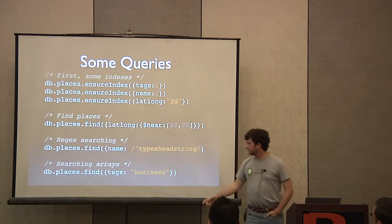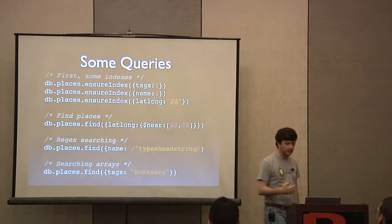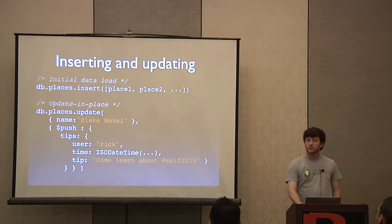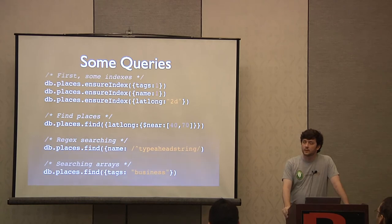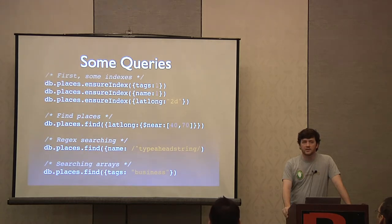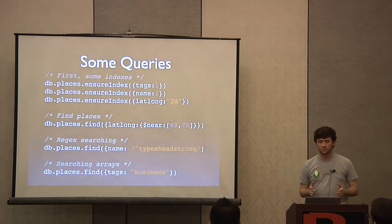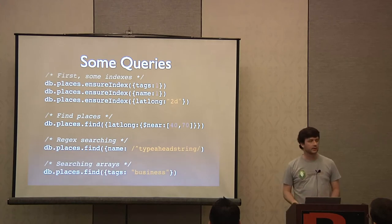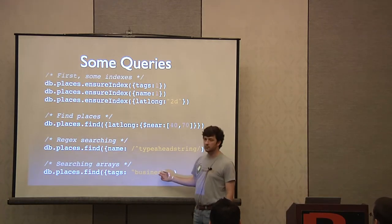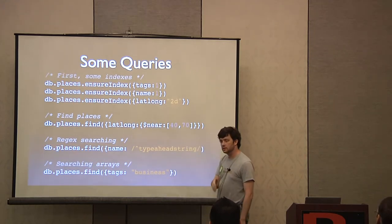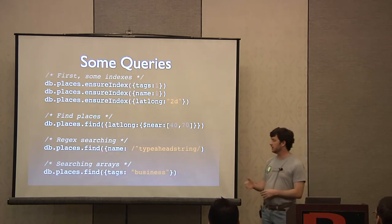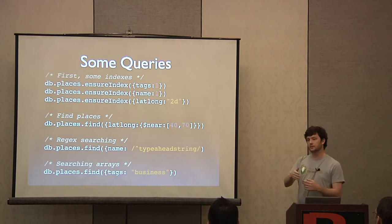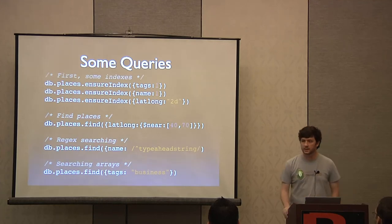Question: what happens when two documents have different formats — one has tags as an array and one has tags as a string? MongoDB handles it on a document-by-document basis. For a list, it finds where the value is one of the elements; for a string, it finds an exact match. The index creates an entry for every element of tags, looks it up, and finds matching documents to return as query results.